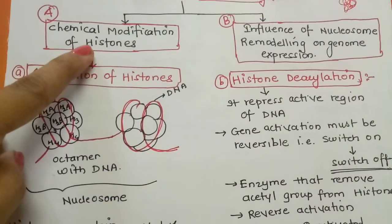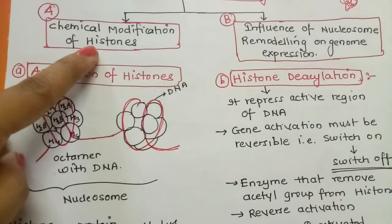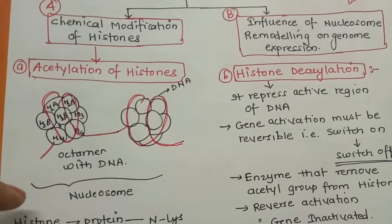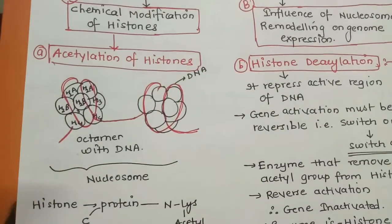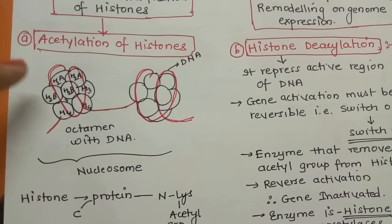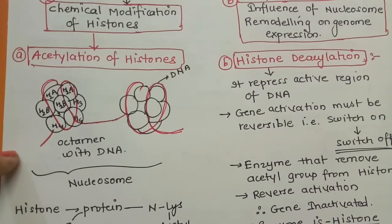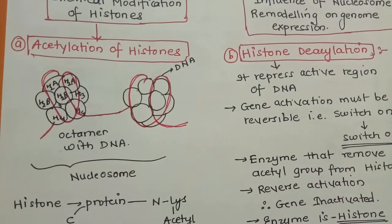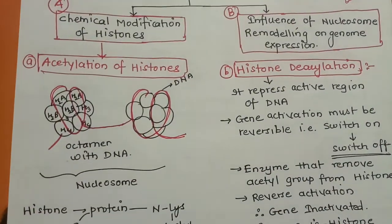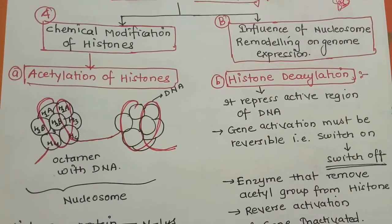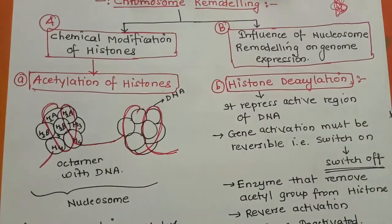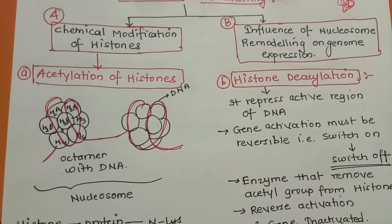So first we will see chemical modification of histones - it is also a type of regulation. Depending on whether histone proteins are active or inactive, the activation and inactivation of our DNA occurs. When histone proteins are active, the gene will also remain active. We need to study the chemical mechanism of when histone proteins get activated and when deactivation occurs. This is why we study this topic in eukaryotes - just like operons for prokaryotes, in eukaryotes too genes need to be switched on and off depending on the body's requirement.